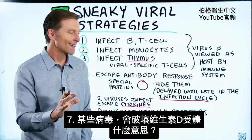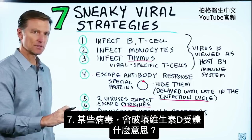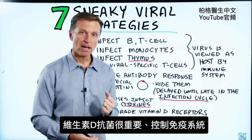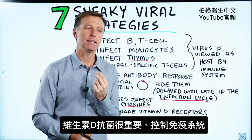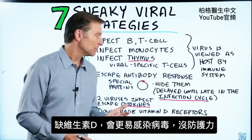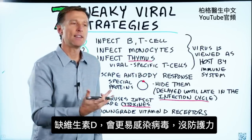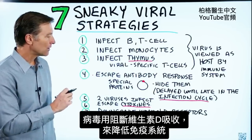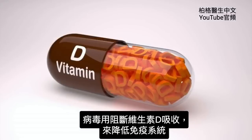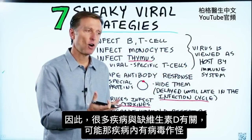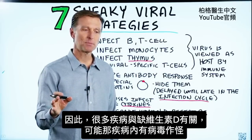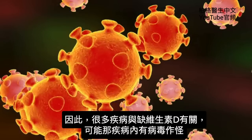Number seven: certain viruses can downgrade vitamin D receptors, which means they block your ability to absorb vitamin D. Vitamin D is intimately involved in controlling your immune system, so without it you're more susceptible to viruses and lose that protection. Viruses have a strategy of suppressing the immune system by blocking vitamin D, which is why you see so many diseases associated with low vitamin D — that's probably because a virus is involved in that disease.